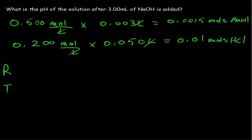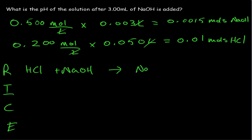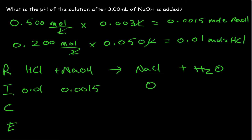Our RISE table stands for the Reaction, the Initial amount, the change of the amounts, and the Equilibrium final amounts. Our reaction is HCl plus NaOH, and it's going to create a salt, which is NaCl, and water. This equation is balanced. So our initial moles of HCl is 0.01, and our initial moles of NaOH is 0.0015. We have no NaCl in the flask, and we have no water in the flask currently.